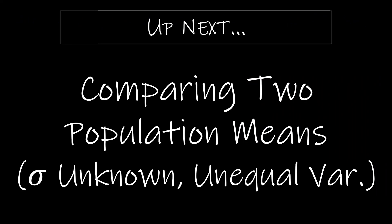Coming up, we're going to look at comparing two population means where we do not know sigma, which is more common. There are actually two parts to that: unequal variances and equal variances. Up next we're going to look at unequal variances.